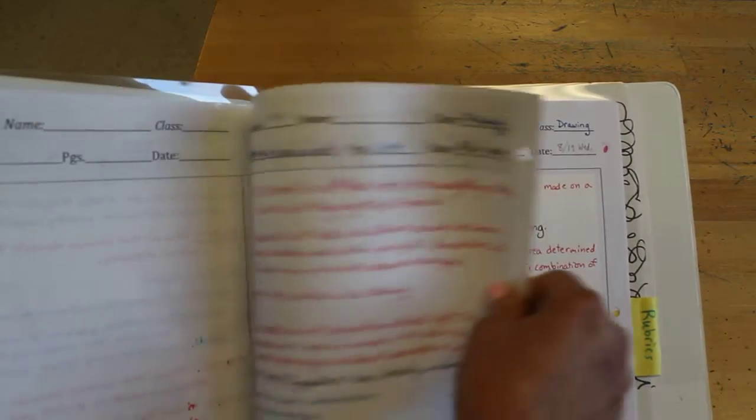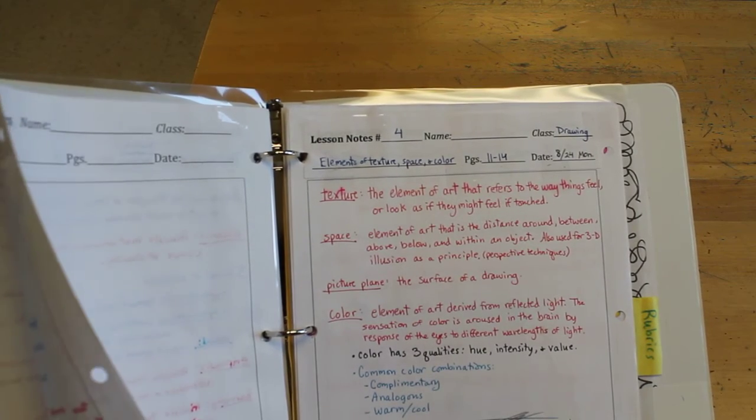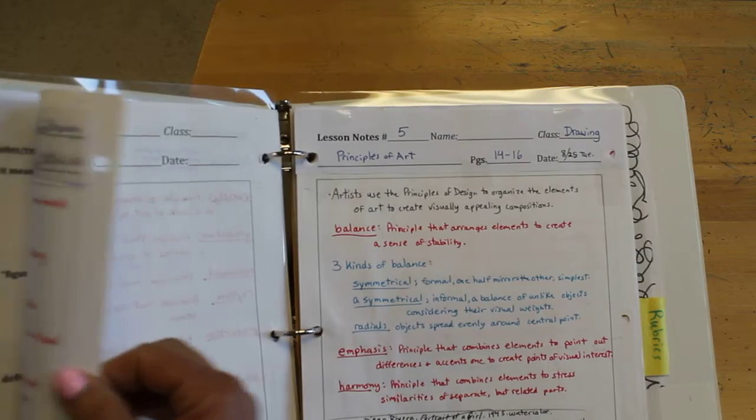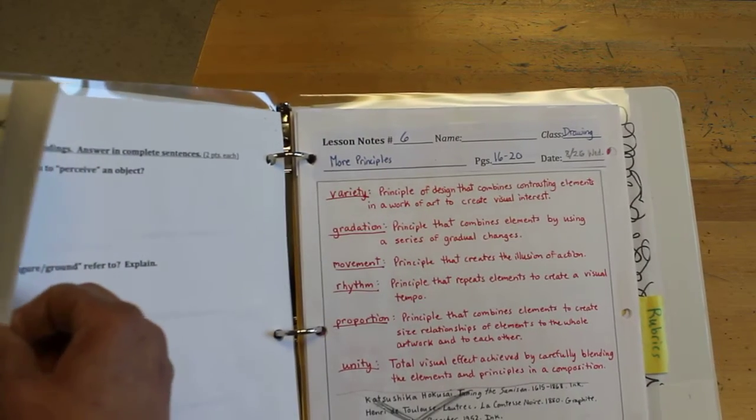Lessons three was elements of art. Lesson notes four was elements of texture space and color. Number five notes was principles of art. And number six notes was more principles, like really principles of design.